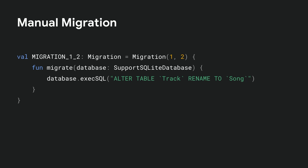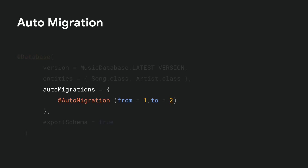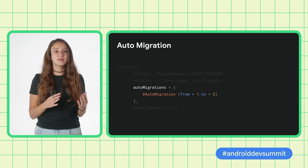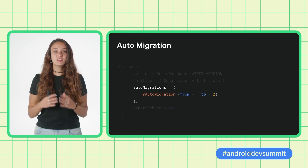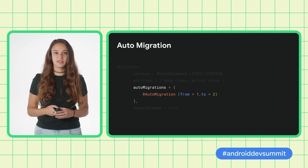You can see here that you will have to manually write and execute the statement to perform this change. However, with auto migrations, you can handle this change by simply defining an auto migration in your database definition and providing the exported schemas of the two versions. The auto migration API will handle the rest by generating and implementing the migrate function for you, complete with writing and executing all the necessary SQL statements.